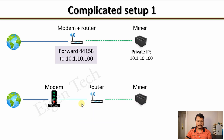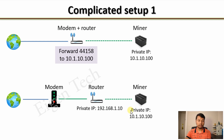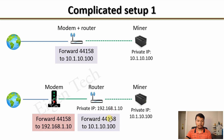If your modem is not in bridge mode, the modem will assign a private IP to the router and the router will assign a separate private IP to the miner — a double NAT situation. In this case, you need to forward port 44158 on the modem to the private IP of the router, and then perform another port forwarding on the router to the private IP of the miner. This double port forwarding is the correct configuration to get your miner out of relay.